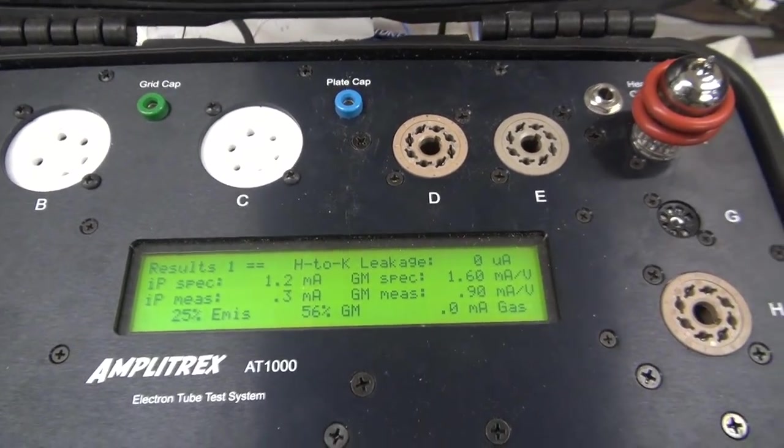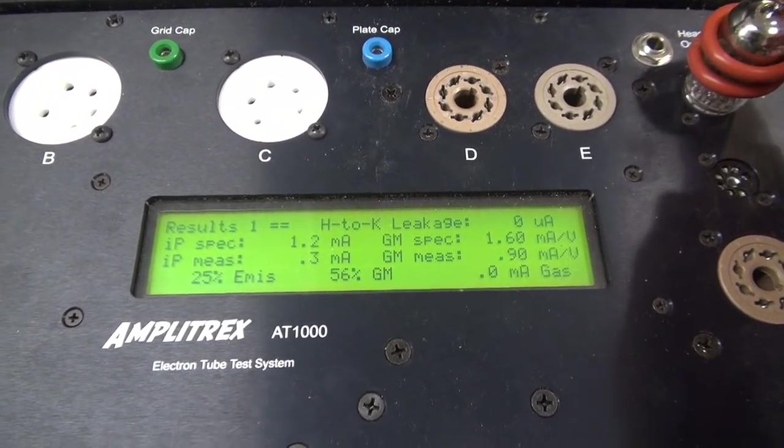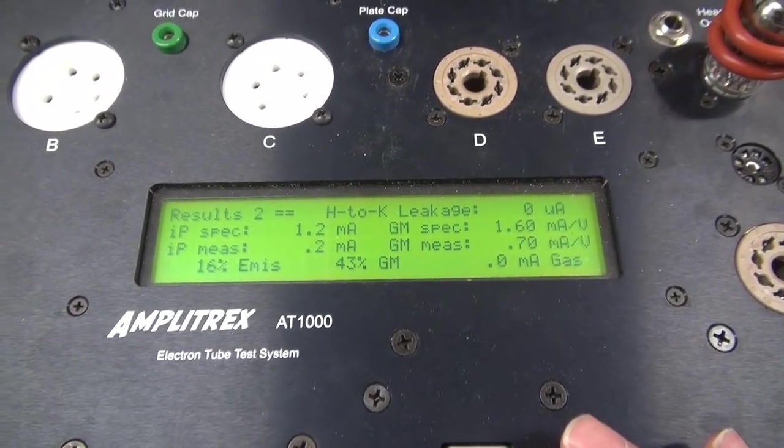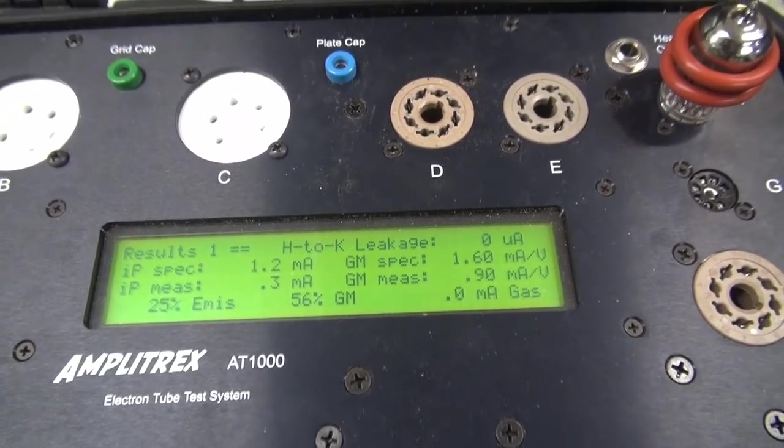So guess what? We got a bad 12AX7, and it just happens to be the inverter tube. Look at there: 25% emissions on that side, 16% on that side. This thing is dead as a doornail. Let's change it out.